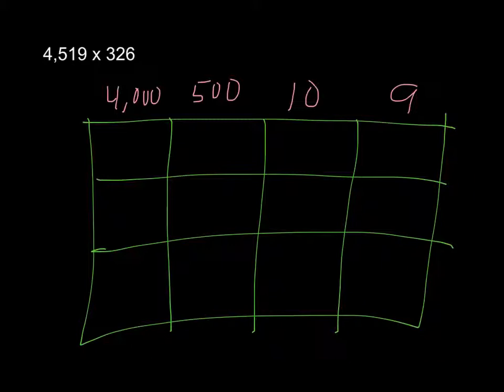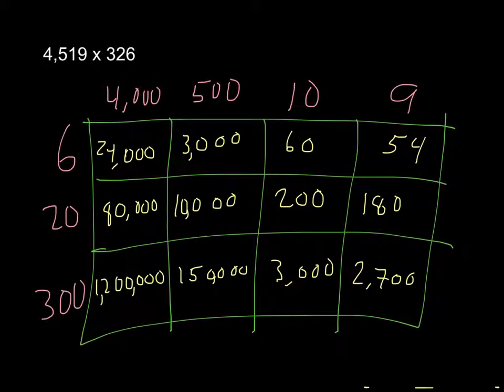And then 300, 20, and 6 going up the side. And then we will multiply the insides. When you multiply it all out, here's what it looks like. You have 24,000, 80,000, 1,200,000, 3,000, 10,000, 150,000, 60,000, 200,000, 3,000, 54,000, 180,000, and 2,700.